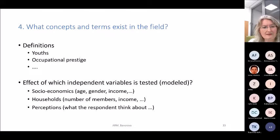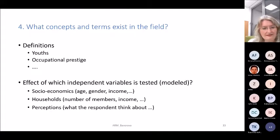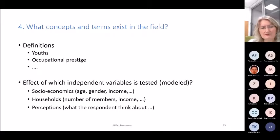Independent variables can be socioeconomic factors like age, gender, income, or household variables such as number of household members. Perceptions — what respondents think about living in rural areas, or how important they perceive nature to be — can also be drivers and independent variables. These affect our dependent variable, the variable we want to explain, such as migration from a village to a city.